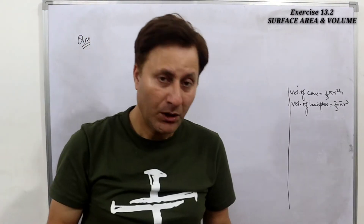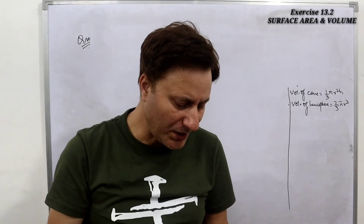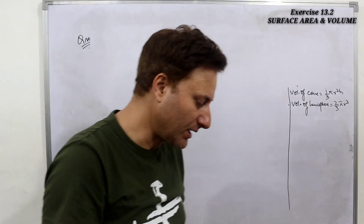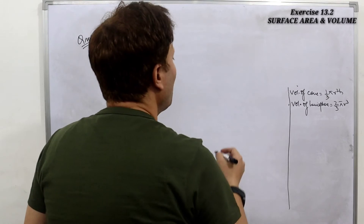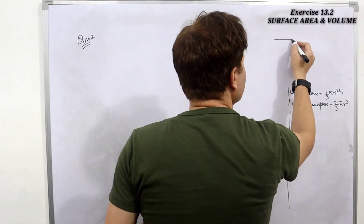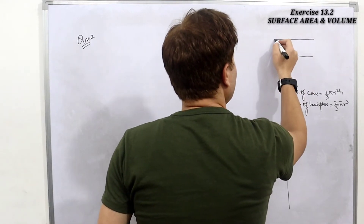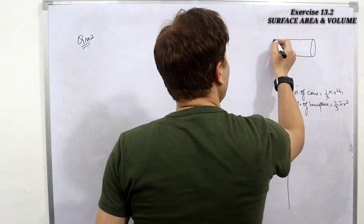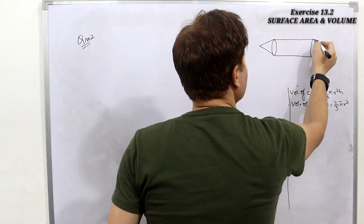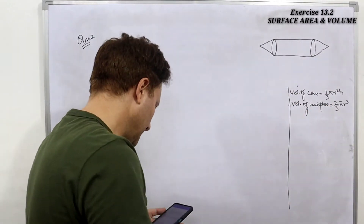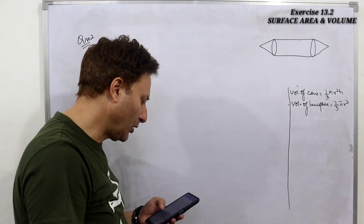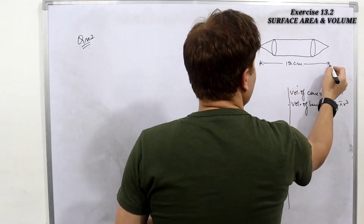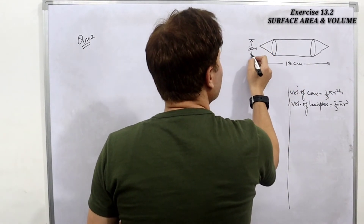Question two says: Rachel, an engineering student, was asked to make a model shaped like a cylinder with two cones attached at its ends. The model has a cylinder with cones at both ends. The diameter of the model is 3 centimeters and the total length is 12 centimeters.